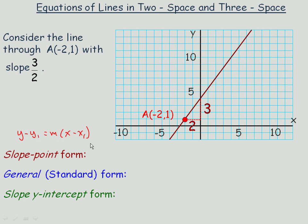We fill in 3/2 in place of m and (-2, 1) in place of x and y. We get y - 1 = (3/2)(x + 2). Now, if we were to expand that out, I'm going to multiply both sides by 2 and we'll get the general or standard form.